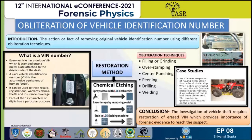The different techniques used include filing or grinding, peening which is hammering of the surface, over-stamping, center punching, and welding, among many others. The original number is filed away or ground down with a power grinder, followed by polishing, then over-stamped with a new number through which stolen vehicles are given new VINs to escape detection.